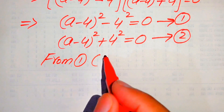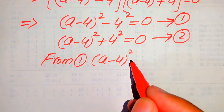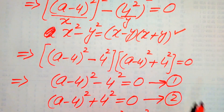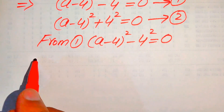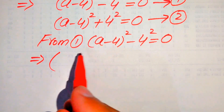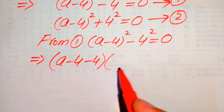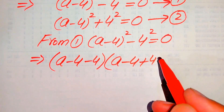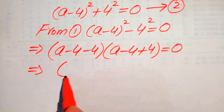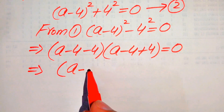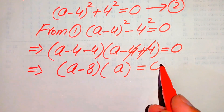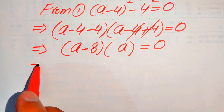Focusing on equation number one: (a-4)² - 4² = 0. We apply the difference of squares formula again, writing this as (a-4 - 4)(a-4 + 4) = 0, which simplifies to (a-8)(a) = 0.